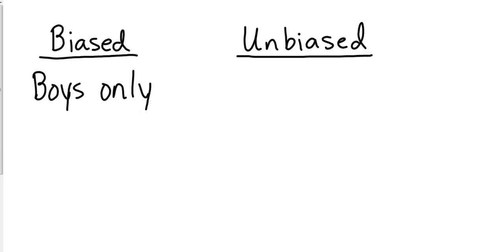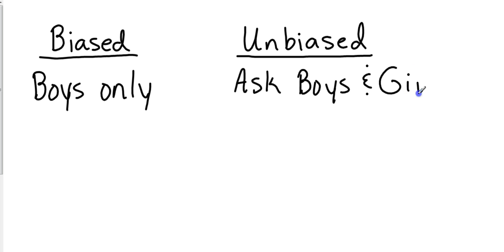Boys-only representation would be fine if this was an all-boy school, but because we have both boys and girls, to get an unbiased sample we would need to ask both genders. Another example: if you polled one single class and asked them who their favorite teacher was, that's a biased sample because students in that class haven't had other teachers and are under the influence of the teacher in the room. But if you polled five students from every class and asked the same question, that would be an unbiased sample.